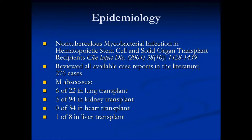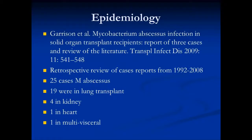That review found 276 cases. M. abscessus was identified six times out of 22 lung transplant infections with NTM, three in kidney, none in heart transplant, and one in liver transplant — though likely underreported due to the 1992 reclassification from M. chelonae. Another review specific to M. abscessus in solid organ transplant found 25 cases from 1992 to 2008, the majority in lung transplant recipients, with a few kidney, one heart, and one multi-vessel case.